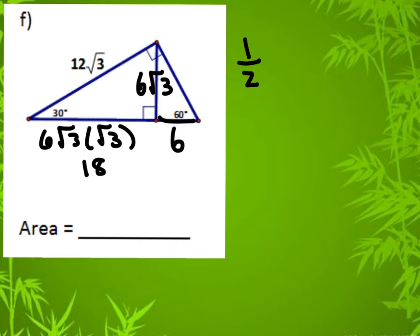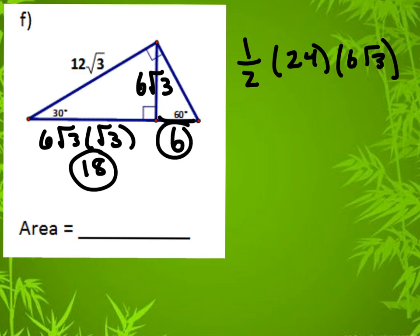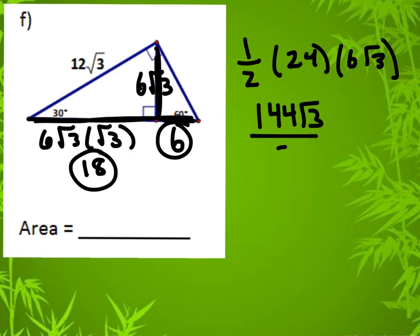Another way to obtain the area is to multiply 24 times 6√3. The 24 comes from combining these two values as the base, and the height is 6√3. This gives 144√3 over 2, or 72√3 units squared — the same answer as before. The first method was definitely the simpler of the two.